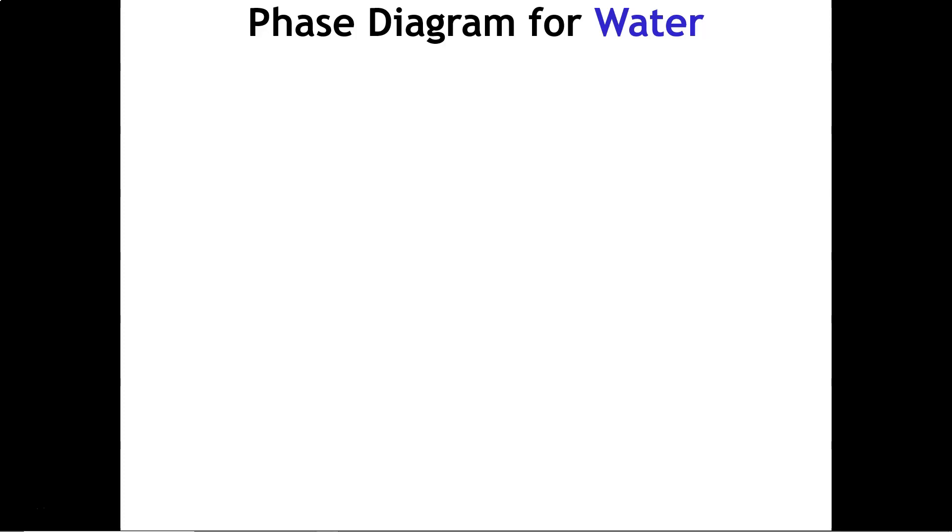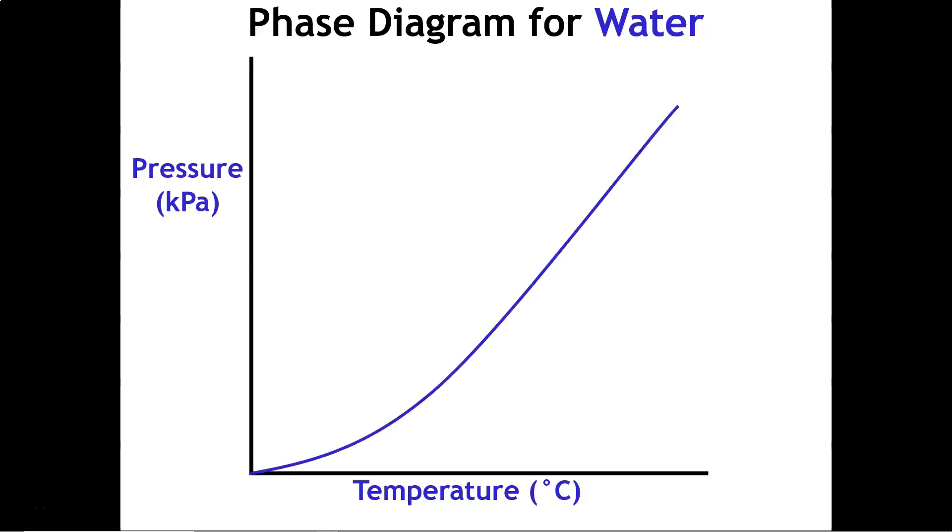When you have a phase diagram, water we talk about all the time, so I figured I would just show you how to draw one for water. You'll have two axes. On the x-axis you'll have temperature, and on the y-axis you'll have pressure. You'll start with a line at the origin, draw it up and slant it towards the right, and then you'll draw a second line about a third of the way up, and it's going to slant to the left.